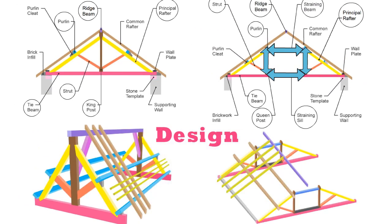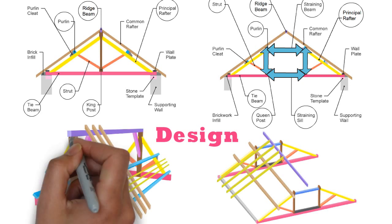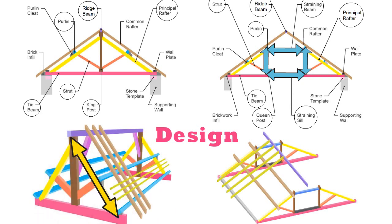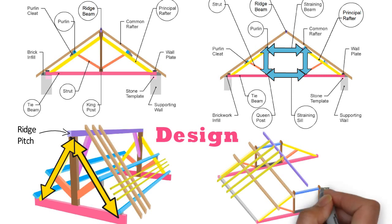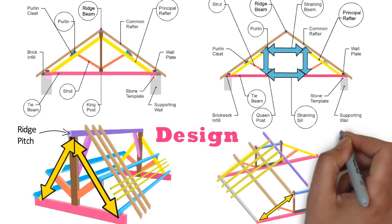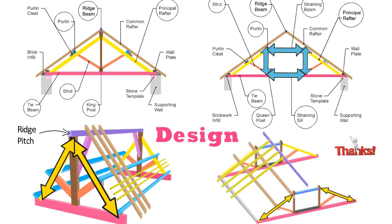In case of king post truss, the top ends of two main rafters are connected to the ridge pitch. Whereas in case of queen post truss, the top ends of two main rafters are joined with the queen post's heads. So friends, see you in the next video — thanks for watching.